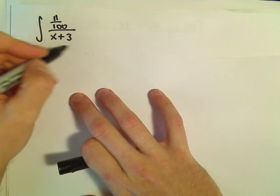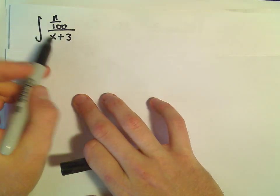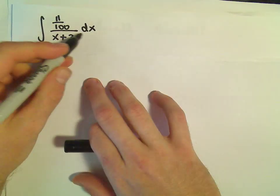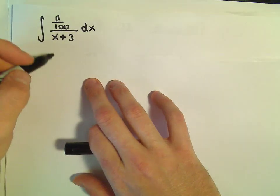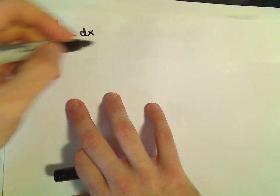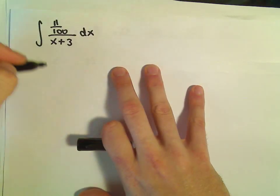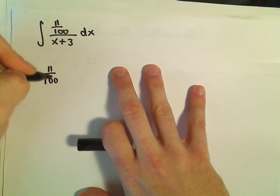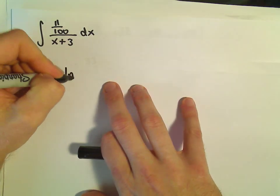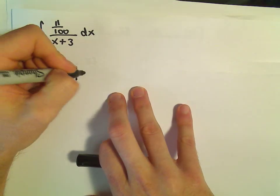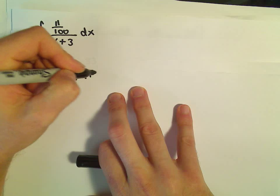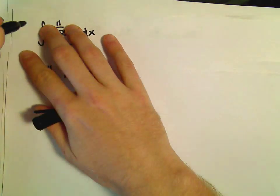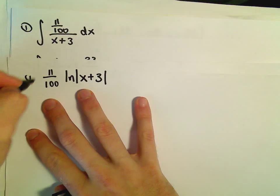The first one is easy — we can just do a u-substitution. We'll let u equal x plus 3, so du equals dx. We can pull the 11 over 100 out, and we'll just end up getting the natural logarithm of x plus 3. So the first one isn't too bad at all.